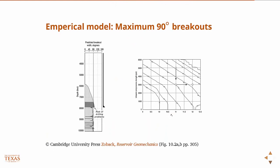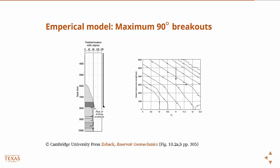Using this empirical model — where you allow a maximum of 90-degree breakouts — you can build a geomechanical model that tells you exactly where you will exceed that 90-degree region. In this example, they determined that between 7,500 and 8,000 feet they would exceed 90-degree breakouts, so they set casing to that depth to prevent it.